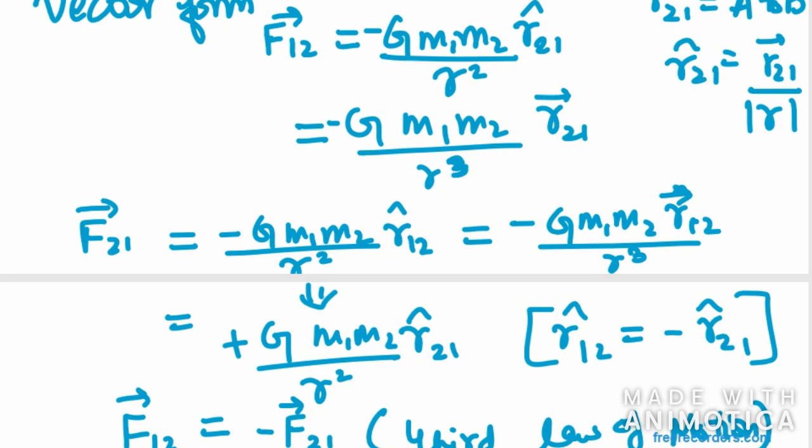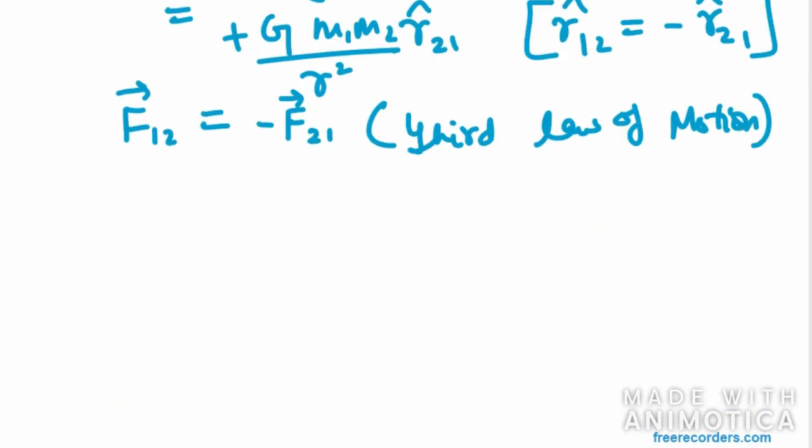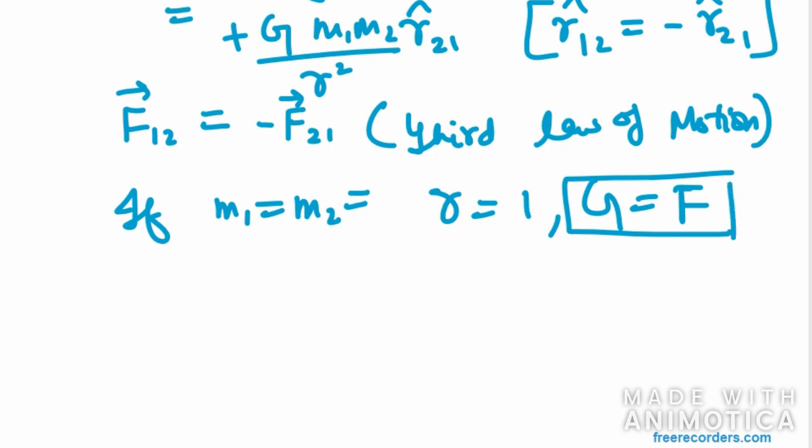Now a special condition is there. So if suppose that we have same masses, m1 is equal to m2, and r is equal to 1, then G will be equal to F. So in this condition, the universal gravitational constant is equal to the force of attraction between two bodies each of unit mass whose centers are placed unit distance apart.